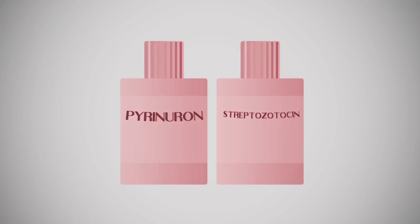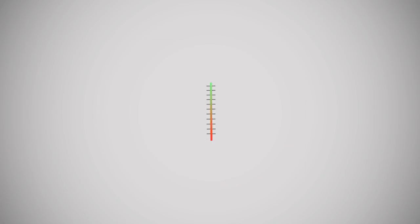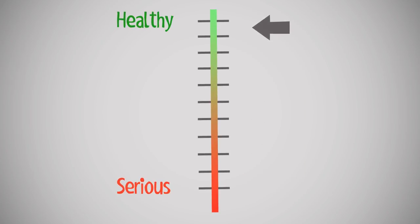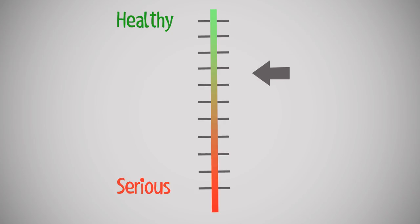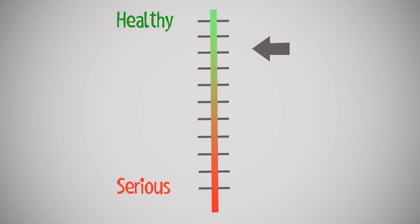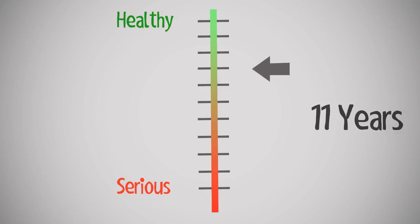There is currently no cure for type 1 diabetes, however keeping blood sugar at healthy levels may prevent symptoms or long-term complications. The life expectancy for a person with type 1 diabetes is good if blood sugar control is maintained, though it is about 11 years less than average without management.